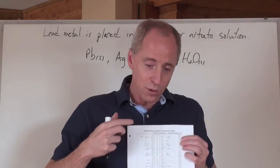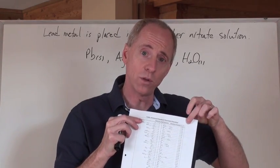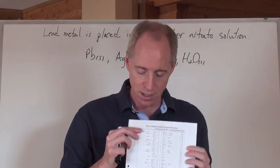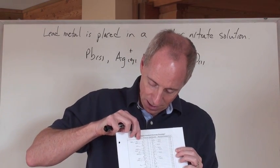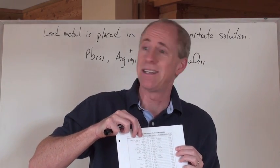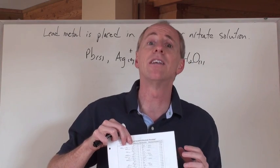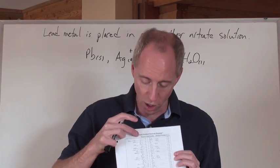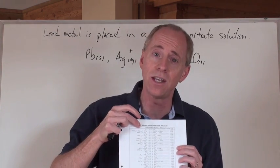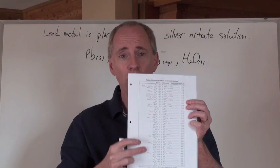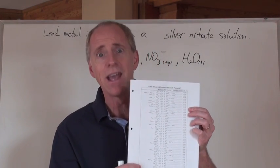The one that has the highest positive voltage as a reduction potential and is the strongest oxidizing agent, pretty much on every chart anywhere you're going to look, is fluorine. F2 gas, top left-hand corner, strongest oxidizing agent.